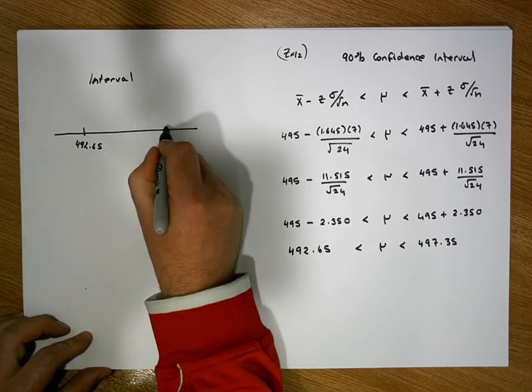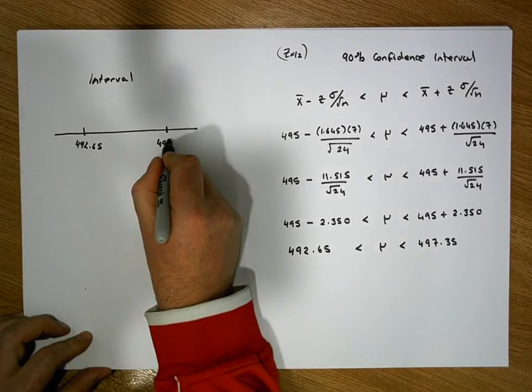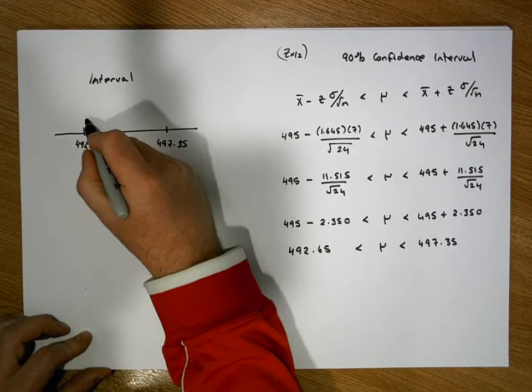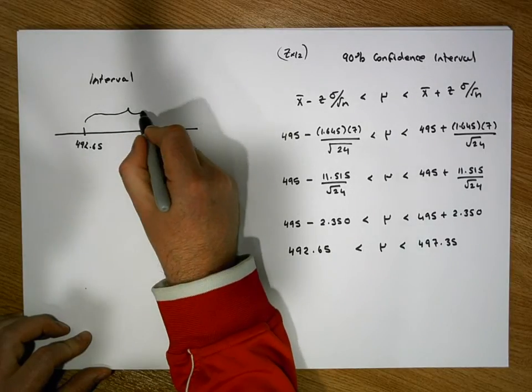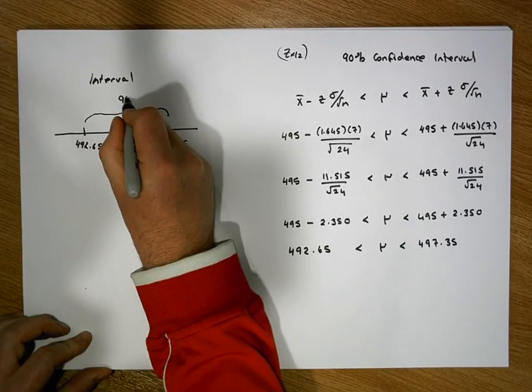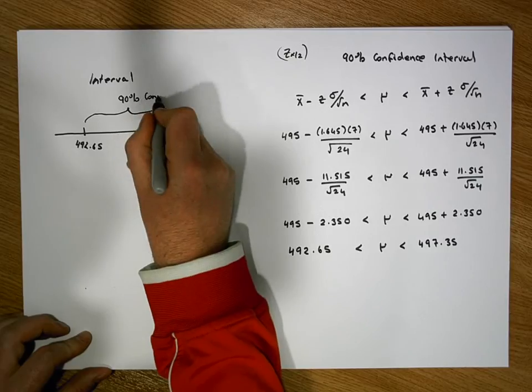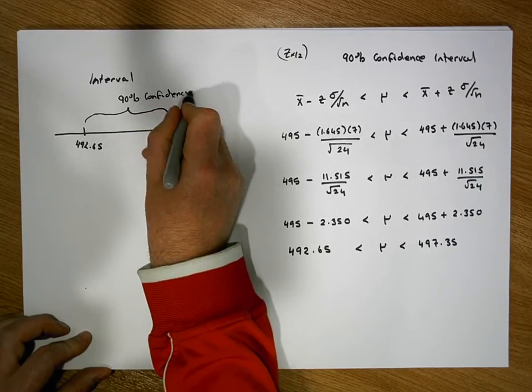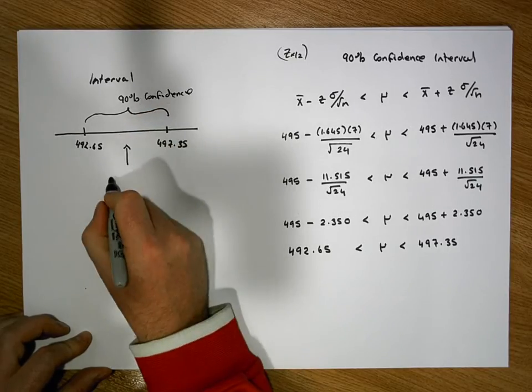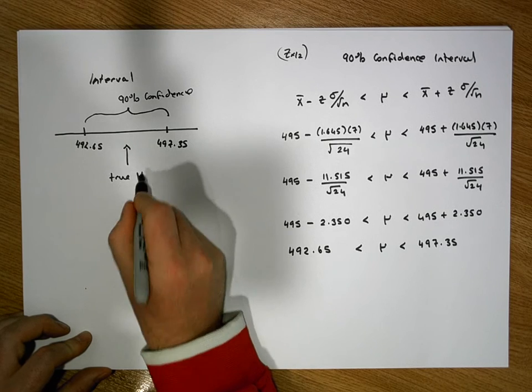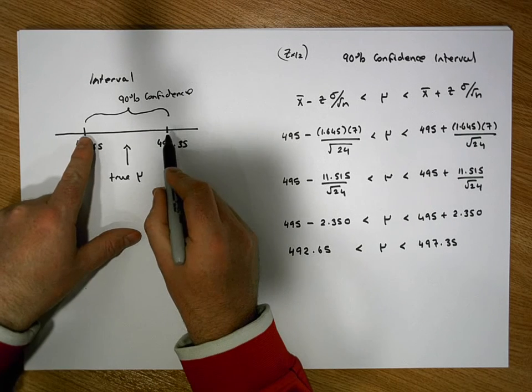and we have 497.35. We're saying that we've got a 90% confidence that the true mean, that the true mean of the population is between these two values.